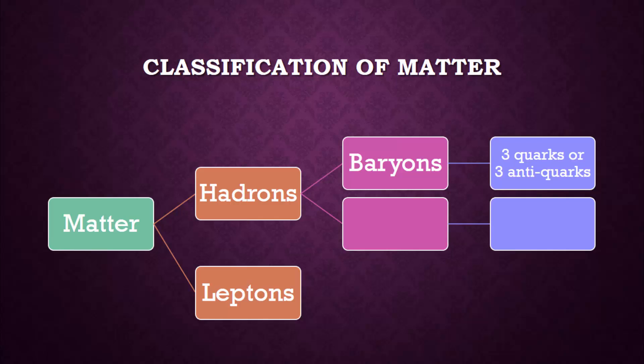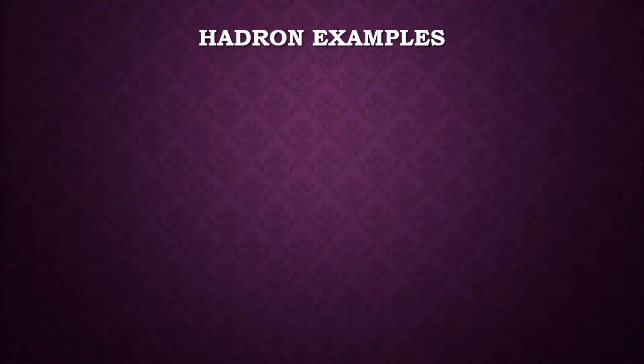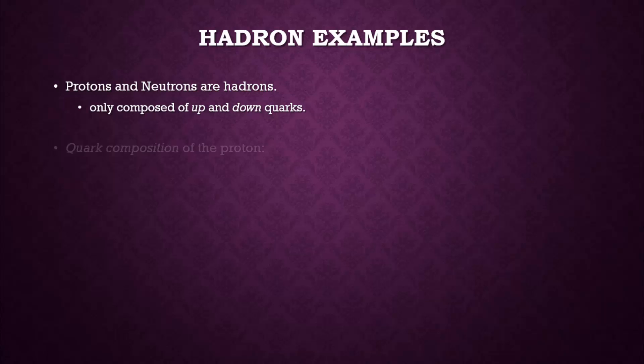The other type of hadron is known as a meson. All mesons are made up of one quark and one antiquark. Let's take a look at a couple of very familiar examples of hadrons. Protons and neutrons are hadrons and are only composed of up and down quarks.